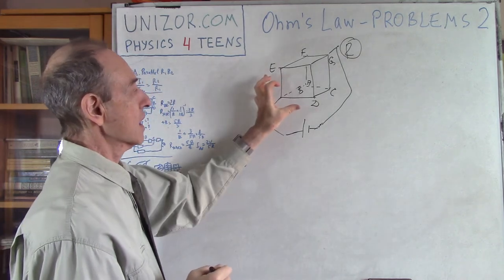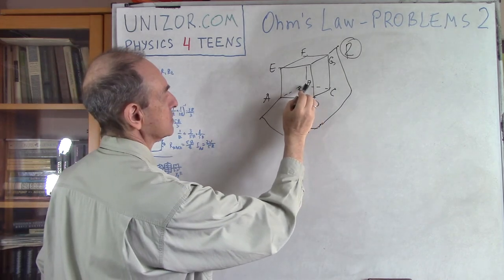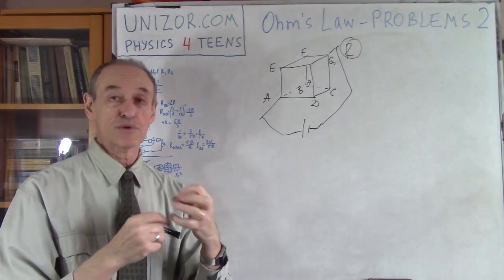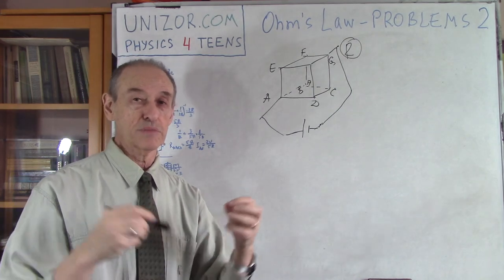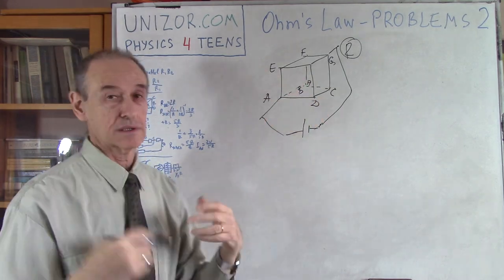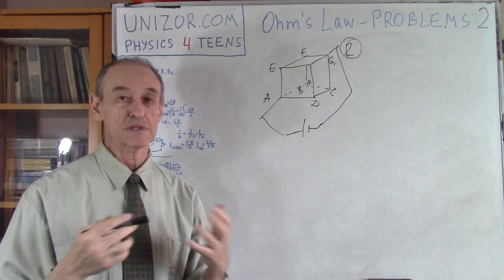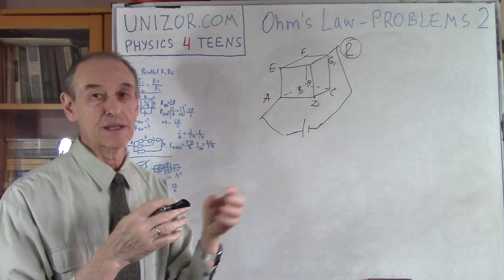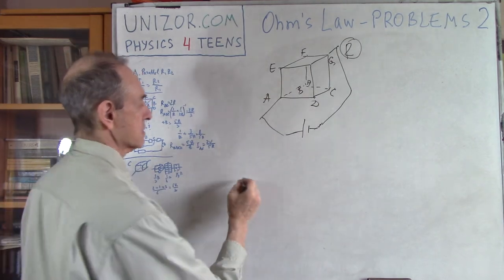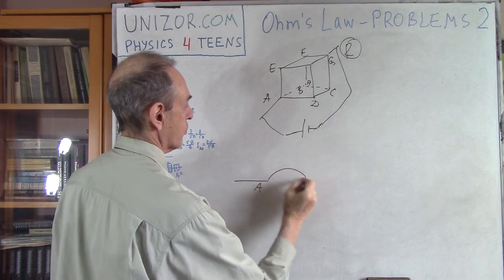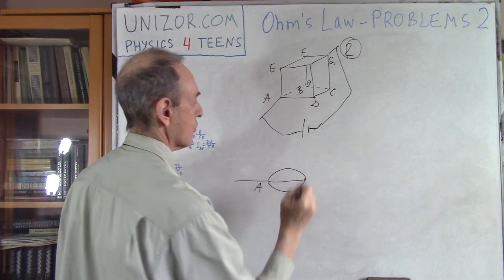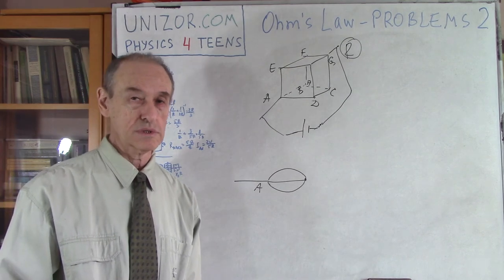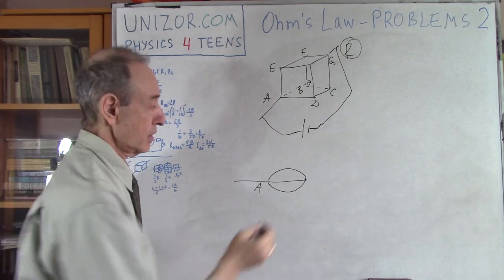If I bend the wire and connect points D, H, and E together, there is no current between these points because the voltage is exactly the same — the difference in electric potential is zero. So there is no voltage and no current. If I just merge them together, I can do it without any problem because there is no difference in electric potential between these points. So I merge them together.